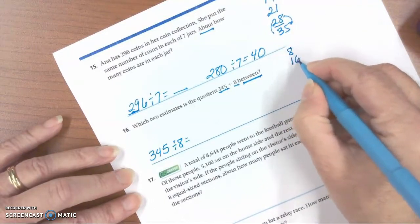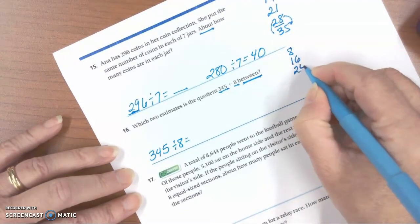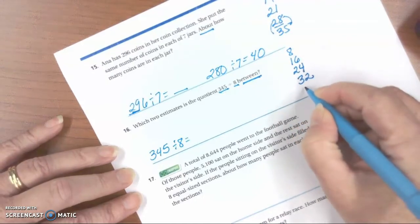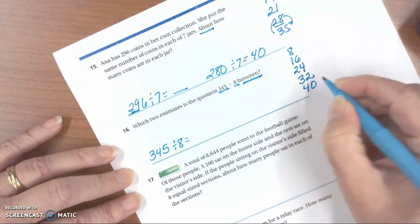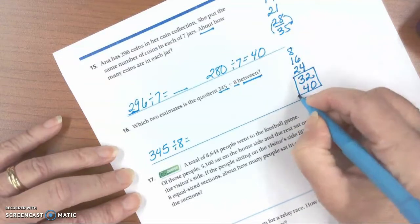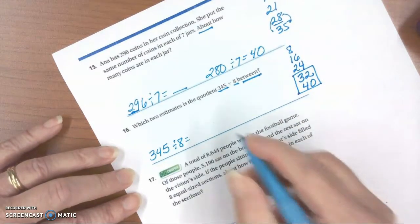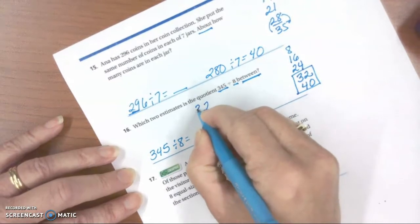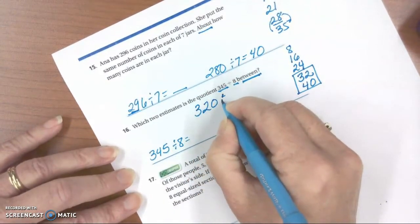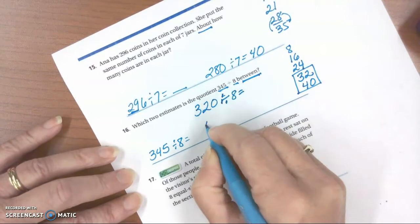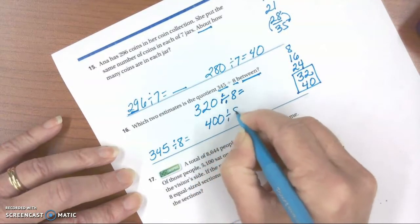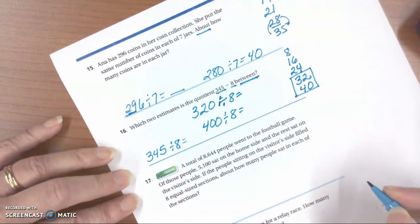8 times 1 is 8, 8 times 2 is 16, 8 times 3 is 24, 8 times 4 is 32, 8 times 5 is 40. So here are the two we're going to use. So we're going to say 320 divided by 8 and 400 divided by 8. And that would give us our estimates.